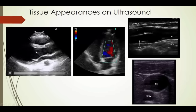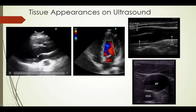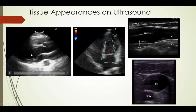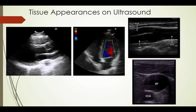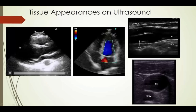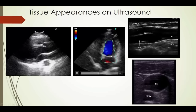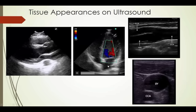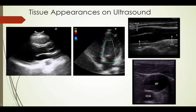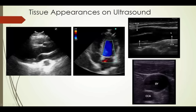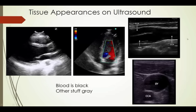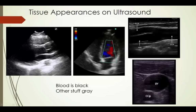A little about what these pictures look like. This is the heart — the left ventricle, with the mitral valve and the aortic valve. The blood inside the left ventricle is black. That's all I really want you to know: blood looks black, other stuff is some shade of gray. Here we're using color Doppler to see blood flow moving through the heart. Here's the carotid artery — the common carotid branching to the internal and external carotid. Blood inside the artery is black. Internal jugular vein and carotid artery in cross-section.